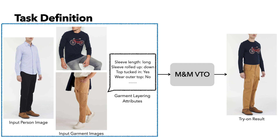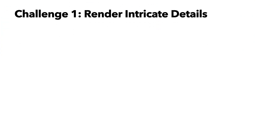In this video, I will mainly describe how our paper tackled two common challenges in the VTO literature. The first challenge is how to render intricate garment details, and the second challenge is how to preserve person identity. Now let's look at the first challenge: rendering intricate garment details.